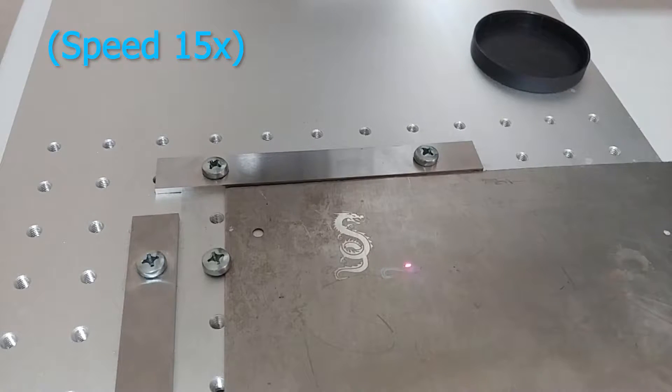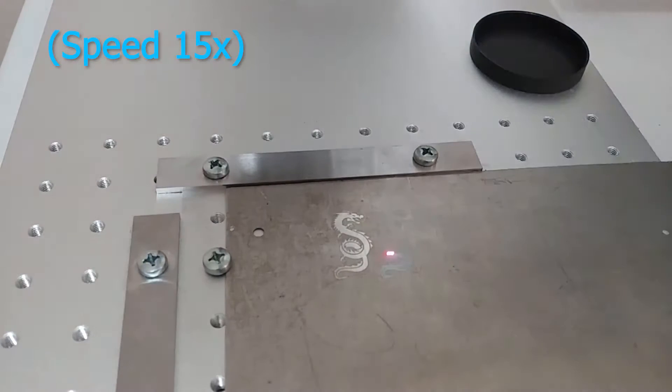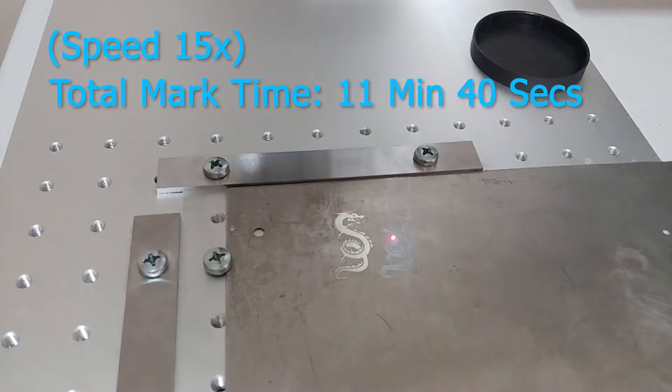The settings we're using for this mark are a speed of 150, power 10%, frequency of 40 kilohertz, hatch of 0.005 millimeters, and an angle for that hatch of zero degrees and 90 degrees. That's two passes. This should produce a black mark, but it won't have much depth to it. It'll be mostly a superficial mark, but it won't be anything so light that you can rub it off.